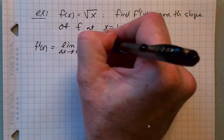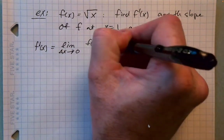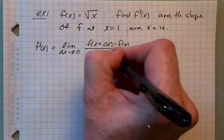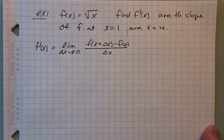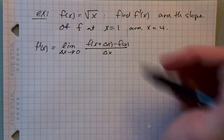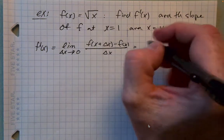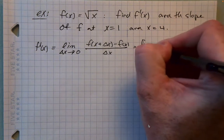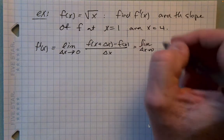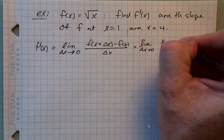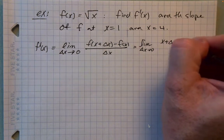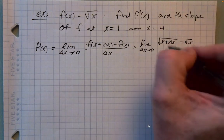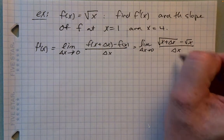So f of x plus delta x minus f of x, all divided by delta x — that's the definition of the derivative. Plugging in the specific function, we have the square root of x plus delta x, minus the square root of x, divided by delta x.